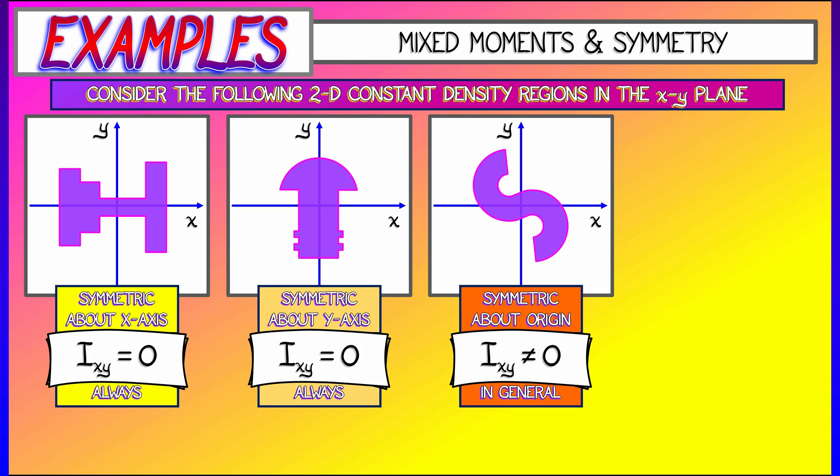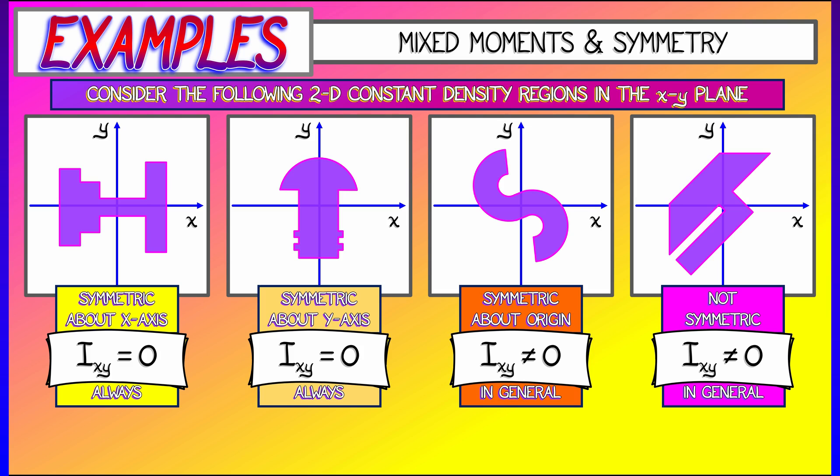And if I have a domain that is completely not symmetric, then you would not expect that mixed moment of inertia to vanish at all. So, in general, the mixed moment is telling you something about the symmetry of the domain.